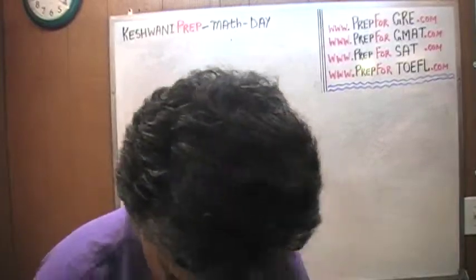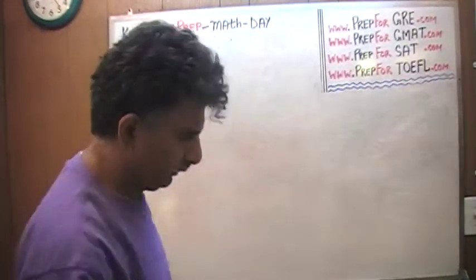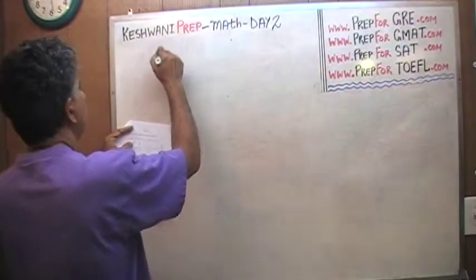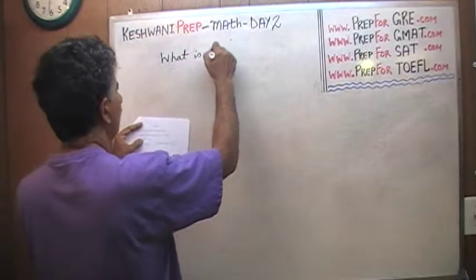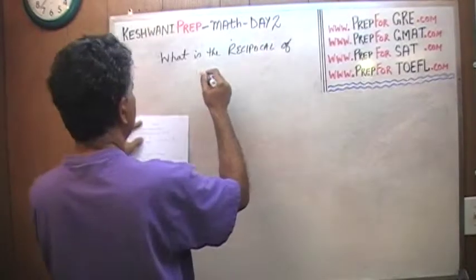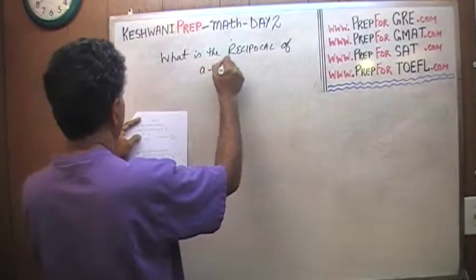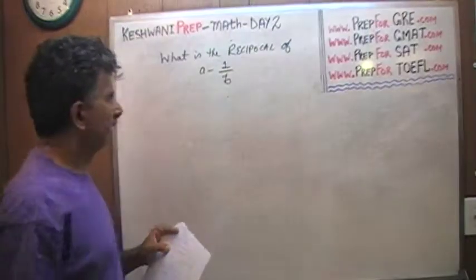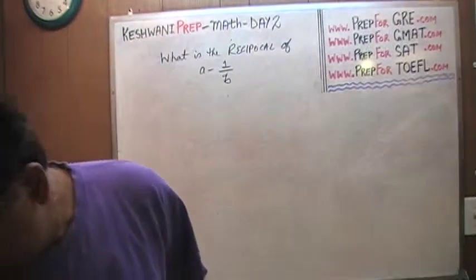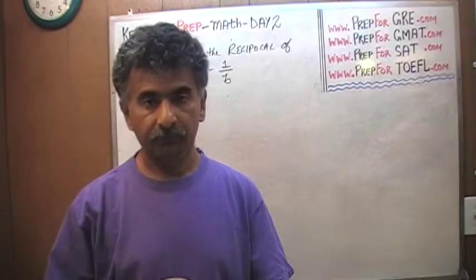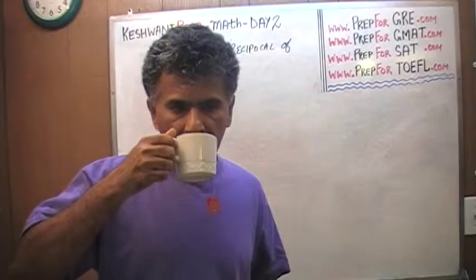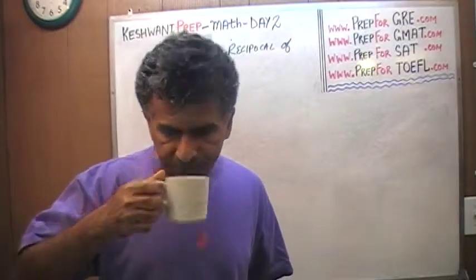Let's see what we have for today. Very straightforward, simple question: What is the reciprocal of A minus 1 over B? Like I said, very straightforward, simple question. The question may be straightforward and simple, but what we need to ask ourselves is: is the answer straightforward and simple? That will depend on you.